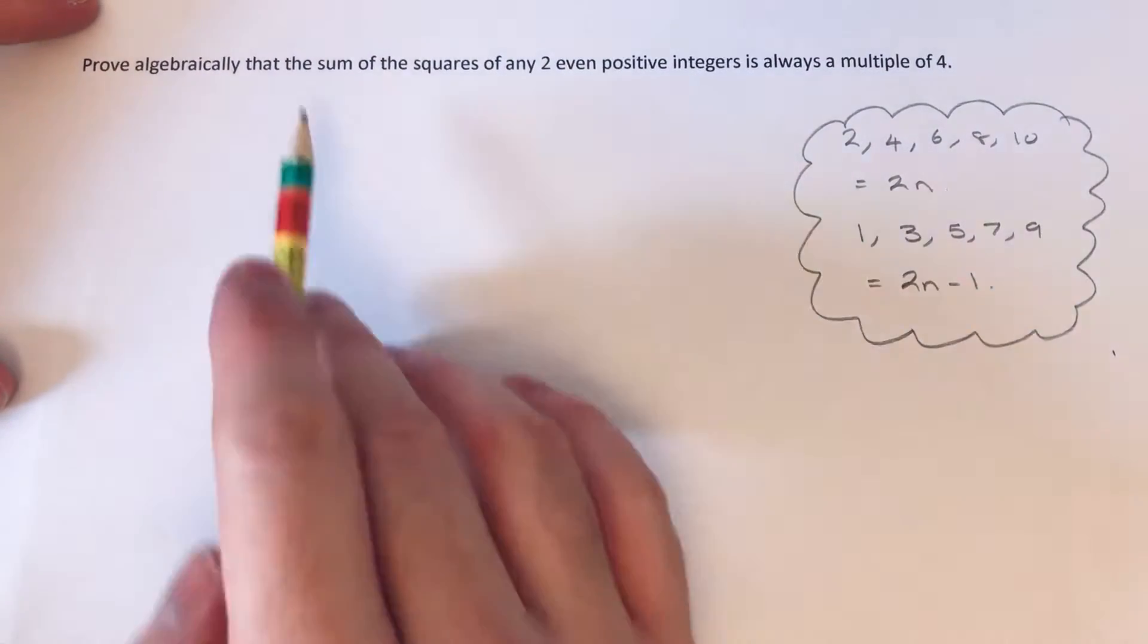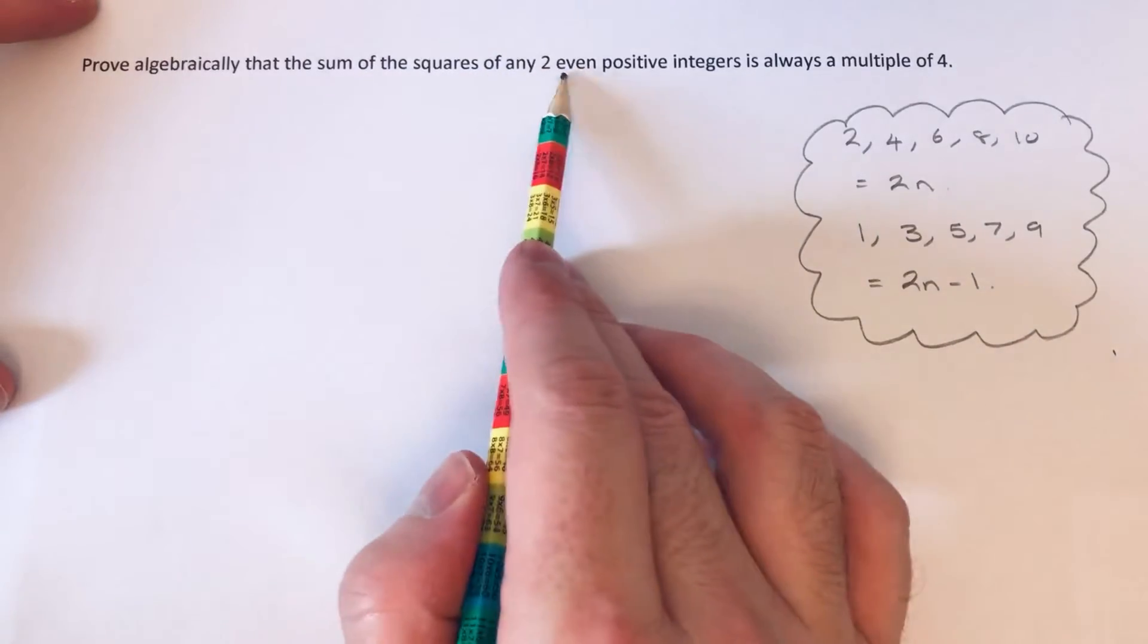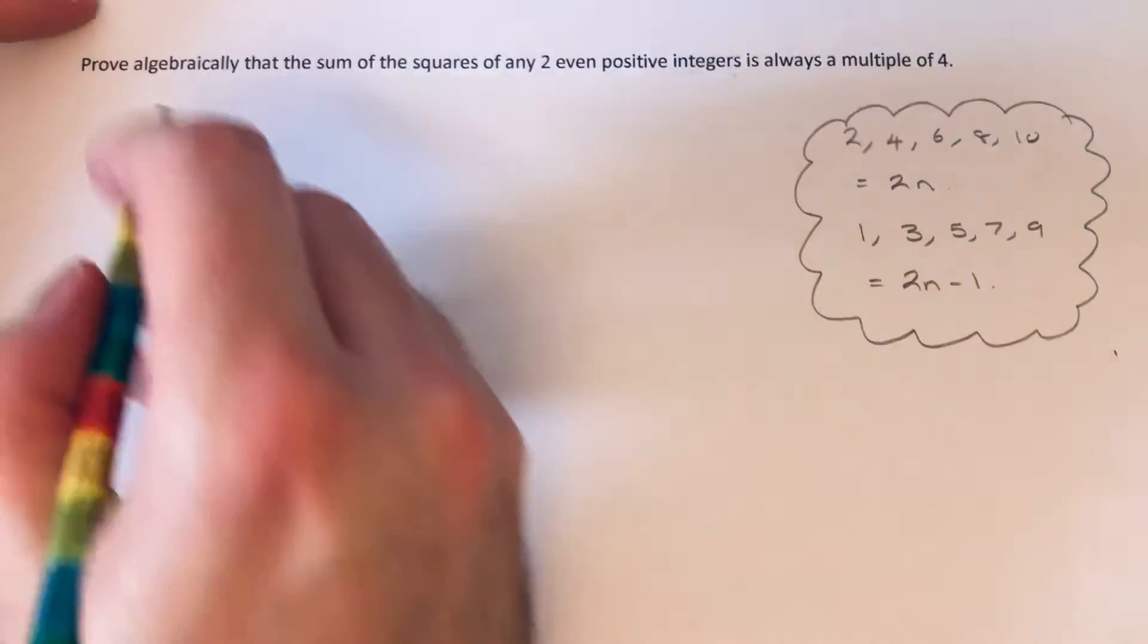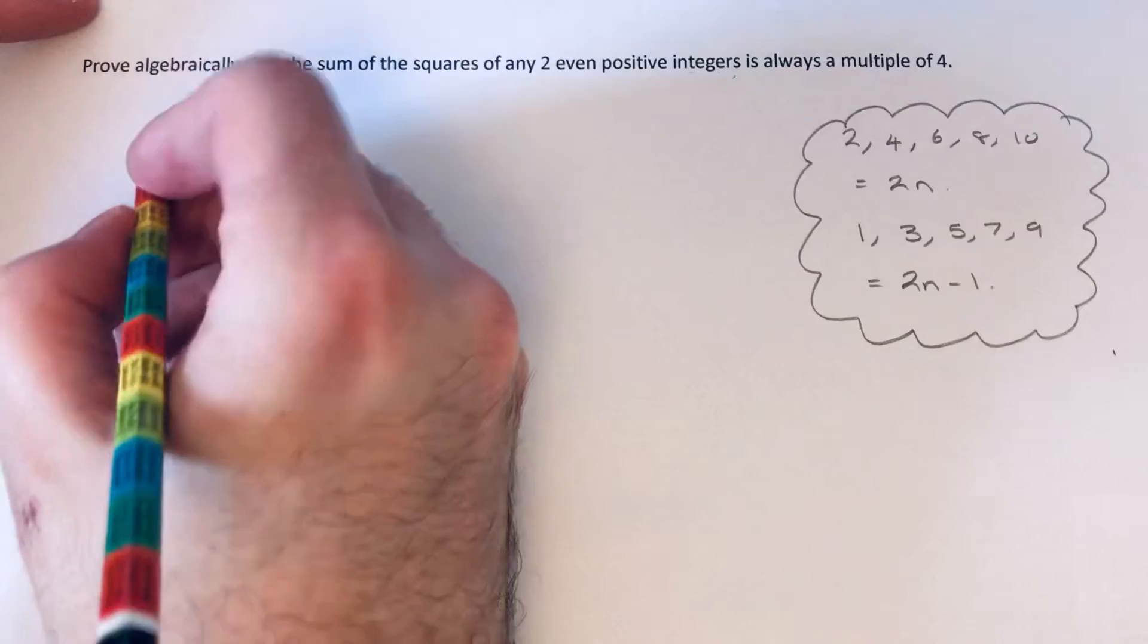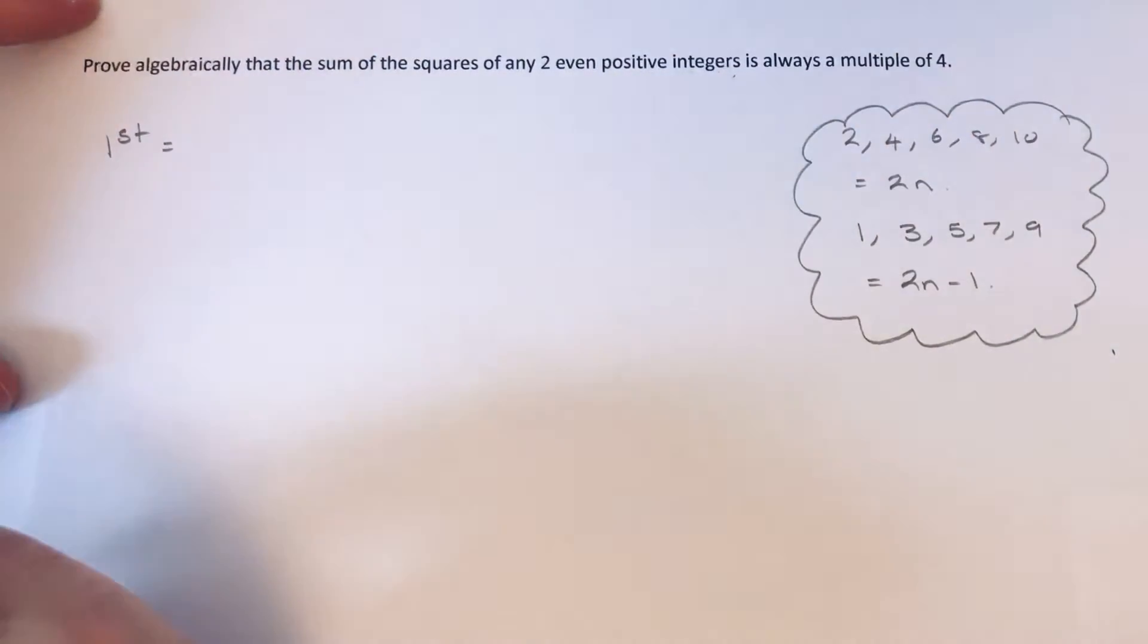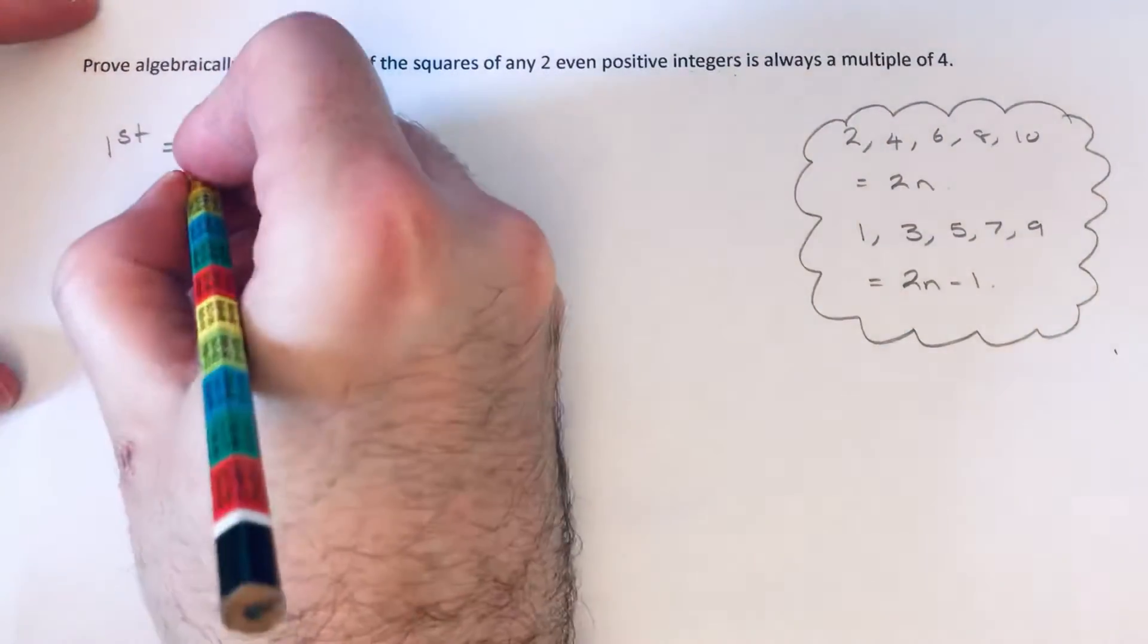So let's get started then. We've got to prove that the sum of the squares of any two even positive integers is always a multiple of 4. So let's call our first even integer 2n.